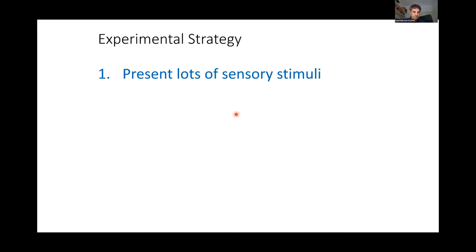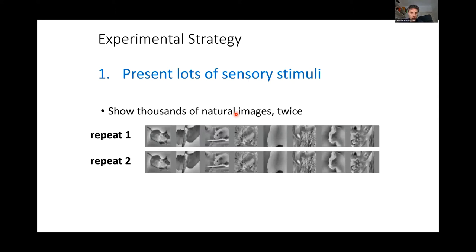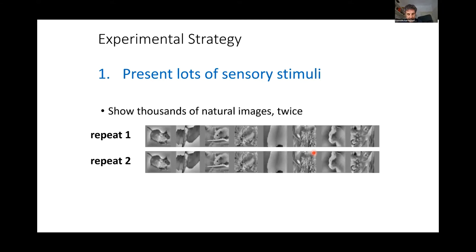To understand the geometry of that manifold, we need to do two things: present lots of sensory stimuli, and record lots of neurons. If we don't, we'll by definition get something low-dimensional — if we only presented four stimuli, the vectors they evoke would by definition lie in a four-dimensional plane. So we present about 3,000 natural images taken from the ImageNet database, and for technical reasons we present them twice each, because we'll do an analysis based on cross-validation.